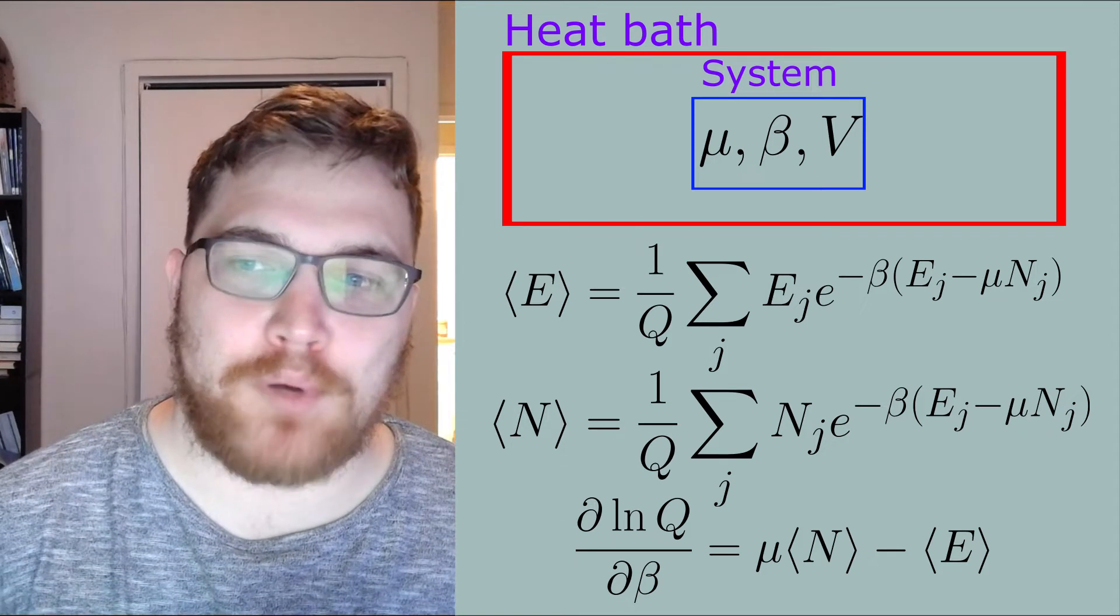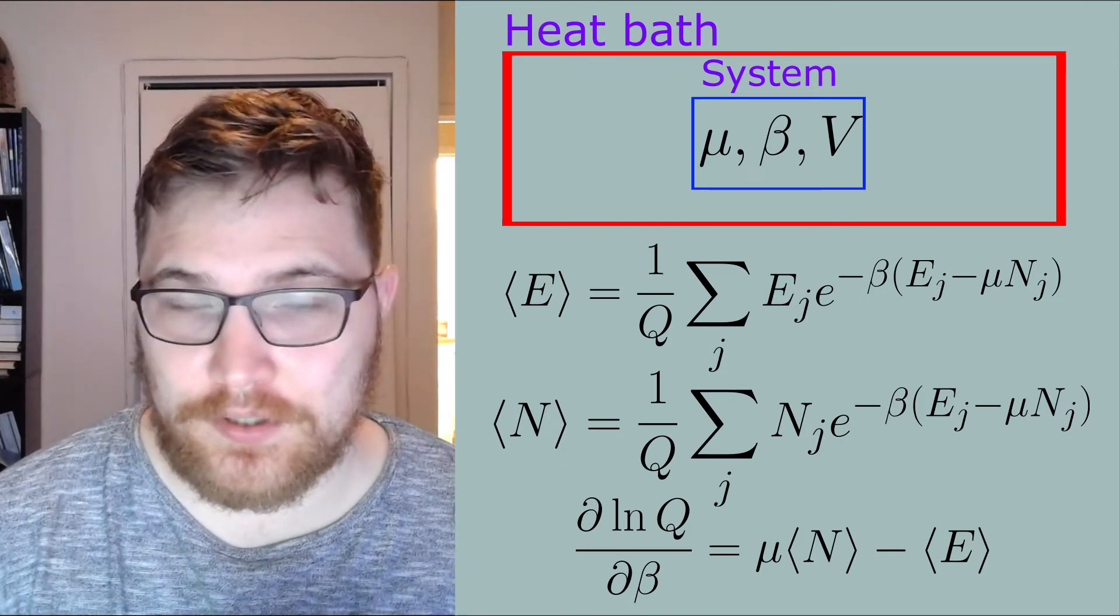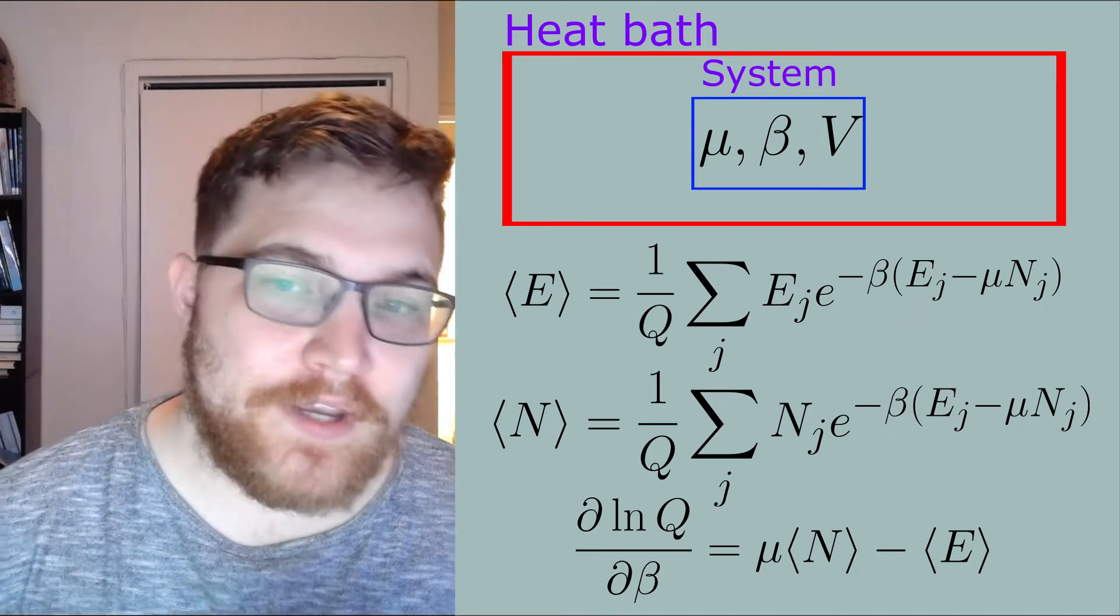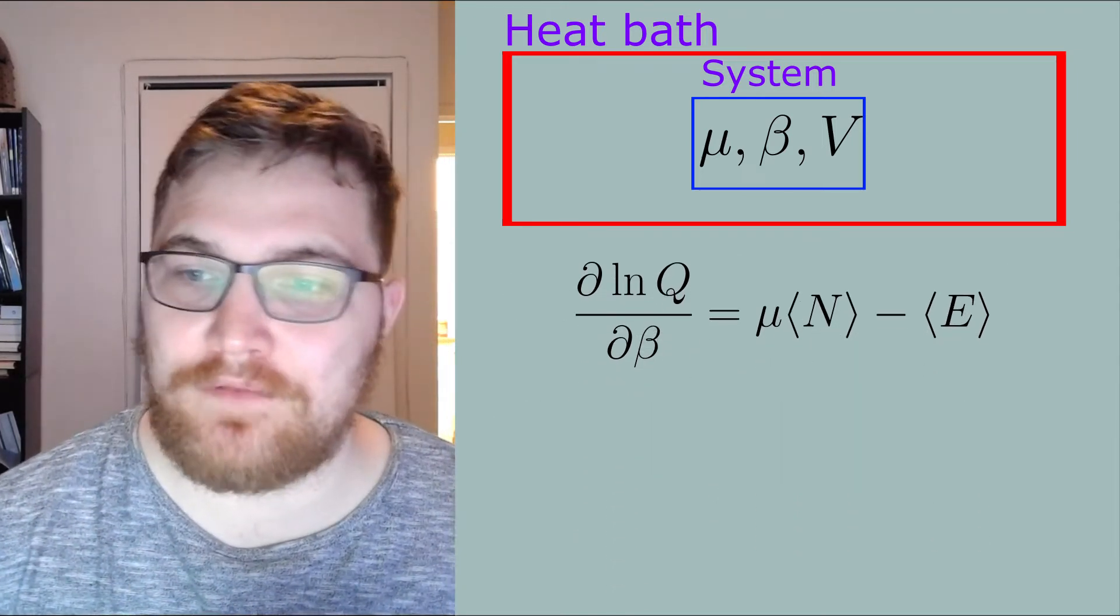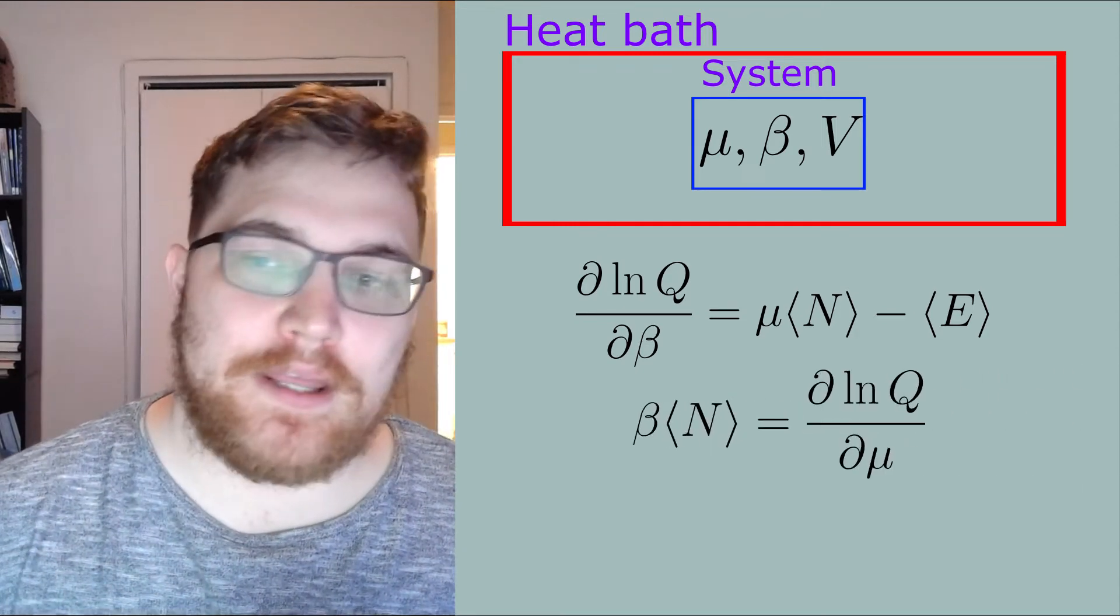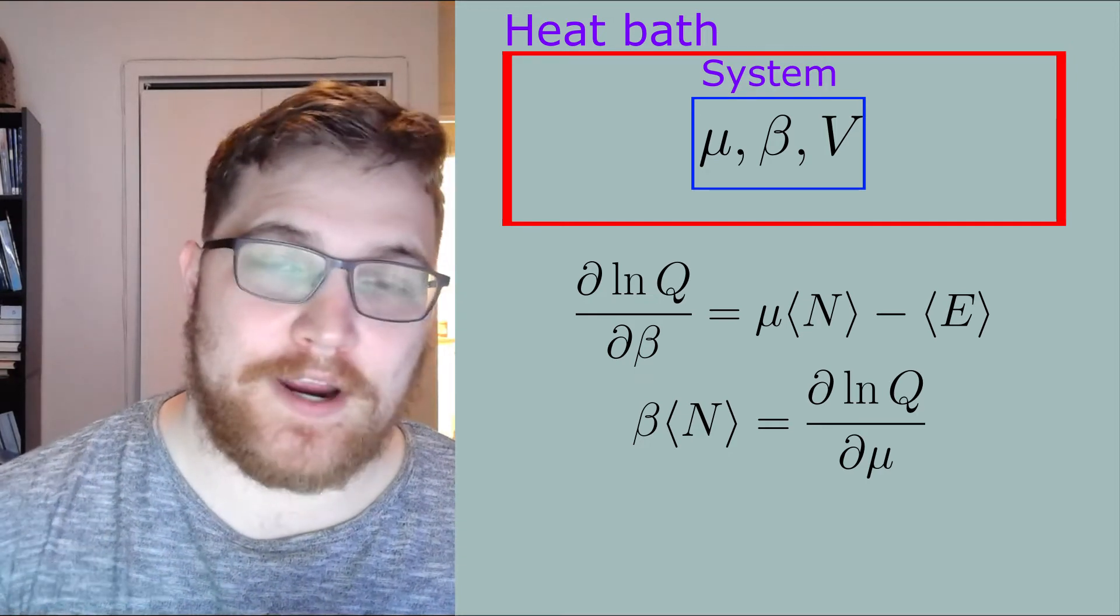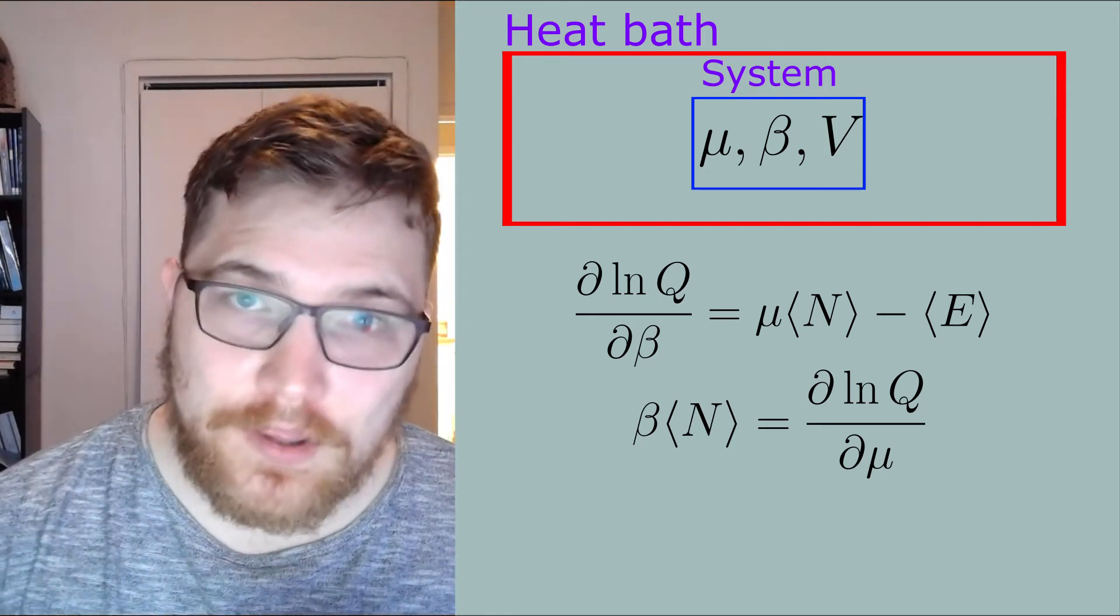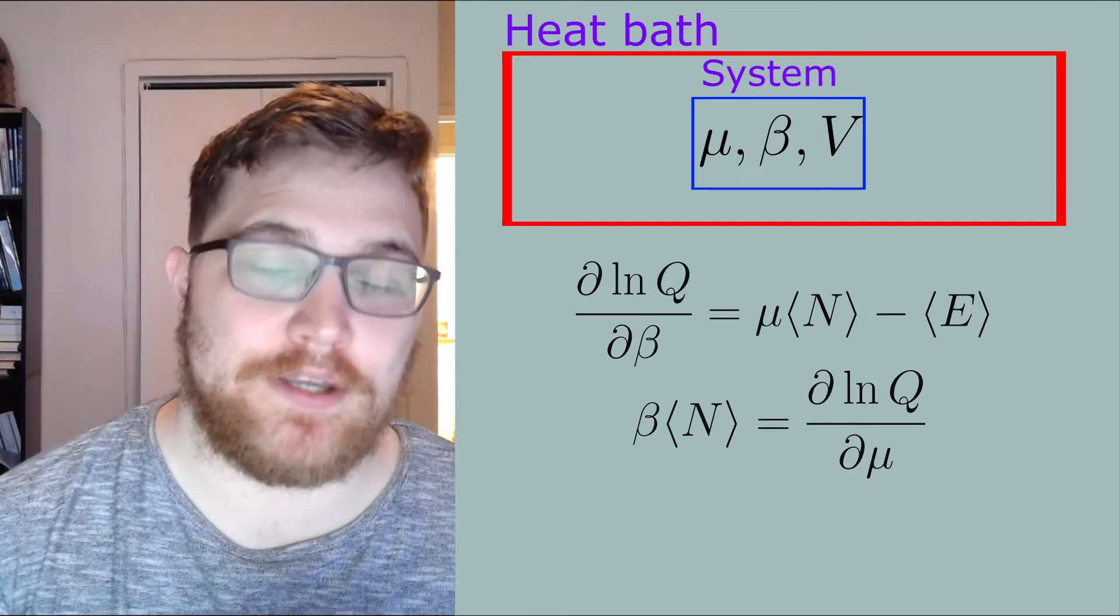This expression tells us a fundamental relationship between the particle number and the energy with respect to the grand partition function. We could have also seen from the definition of the particle number expectation value that we could write the particle number in terms of a derivative of the grand partition function or the natural logarithm of the grand partition function with respect to changes in mu.